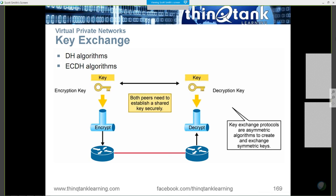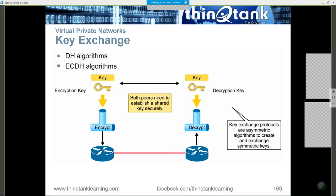Diffie-Hellman is the most popular key exchange method. It is a process that allows us to generate a key and then send that key across an open channel to a destination without exposing that key to anybody that might be sniffing that traffic. With bulk encryption, the keys are not pre-configured.